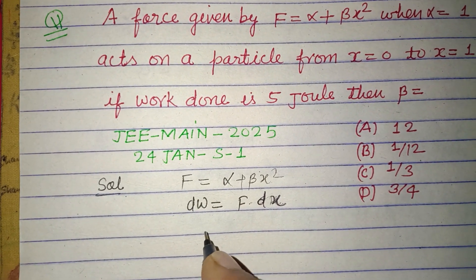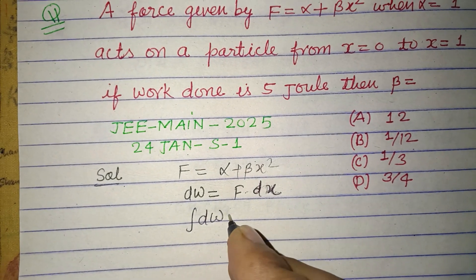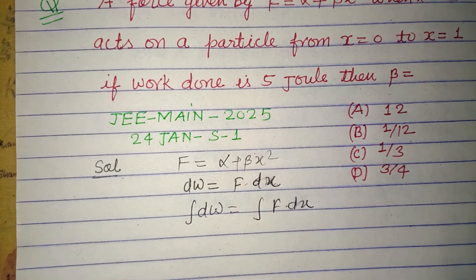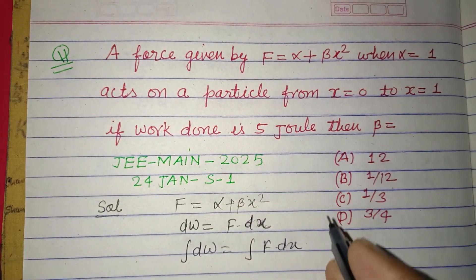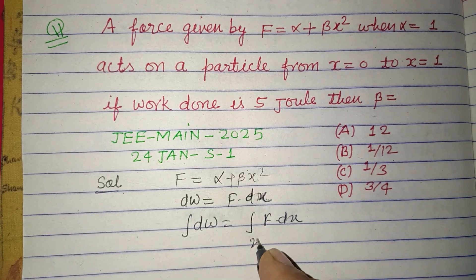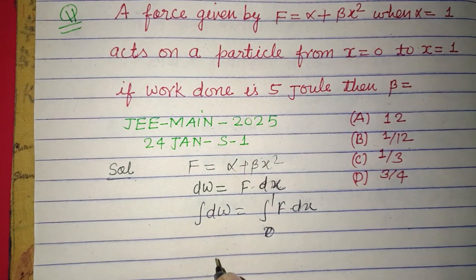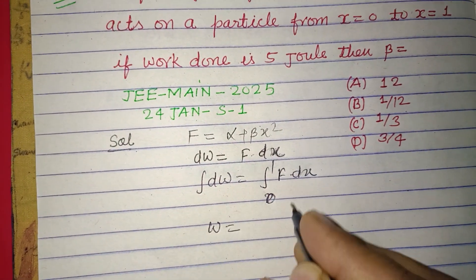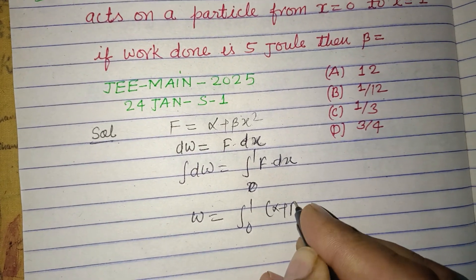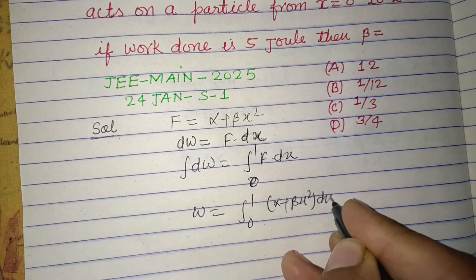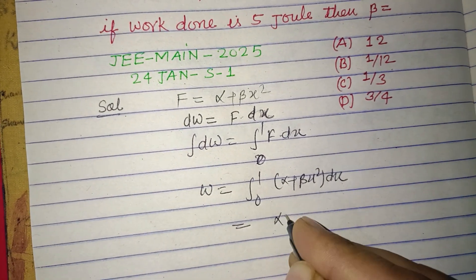Integrating both sides, ∫dW = ∫F dx. Integration F dx, here x is given 0 to 1, so it is W = ∫₀¹ (α + βx²) dx. So this is αx plus β·x³/3.